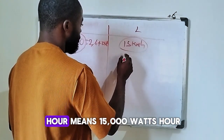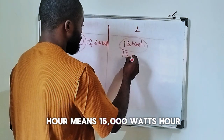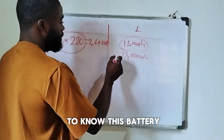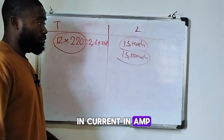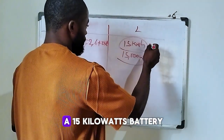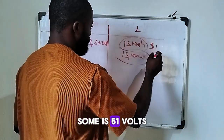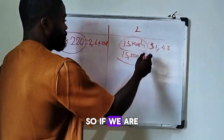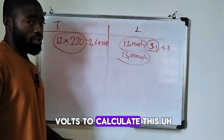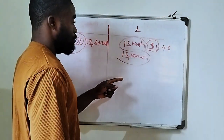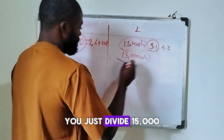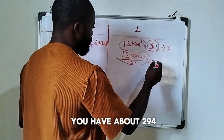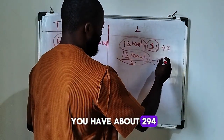Now, 15 kilowatt-hours means 15,000 watt-hours. If you want to express that lithium battery in ampere-hours, the nominal voltage of a 15 kilowatt-hour lithium battery is either 51 volts or 48 volts. Using 51 volts, you divide 15,000 by 51, which gives you approximately 294 ampere-hours.